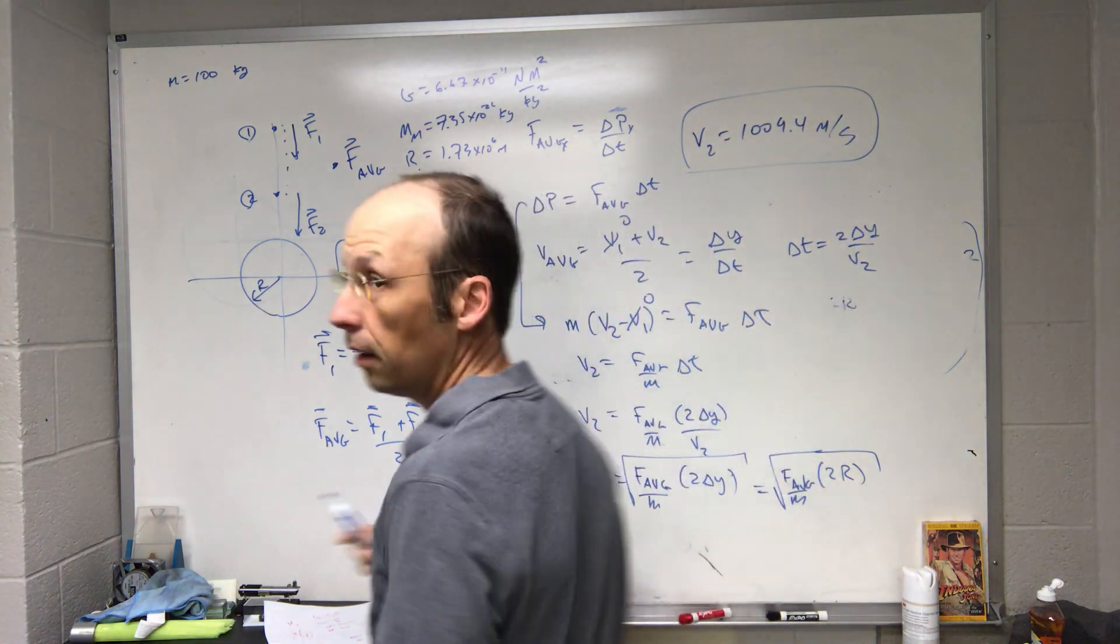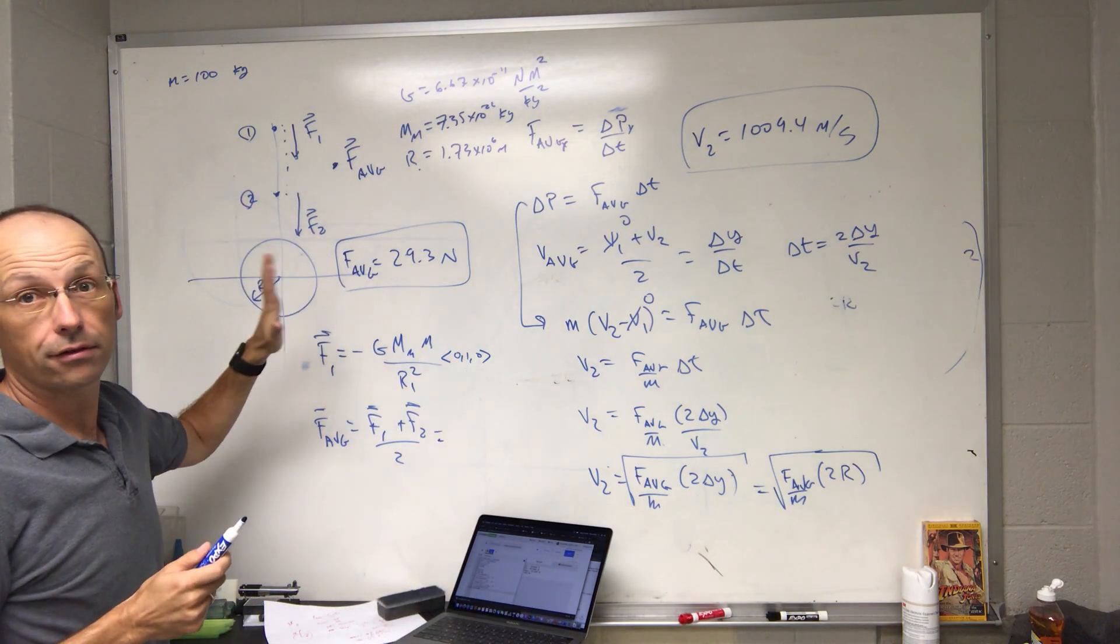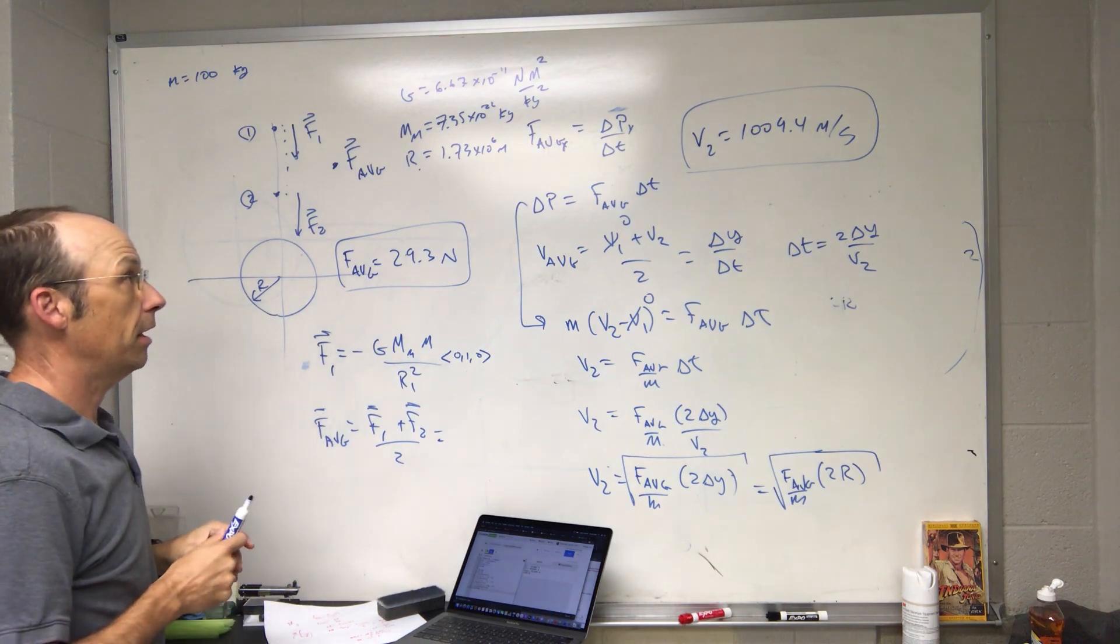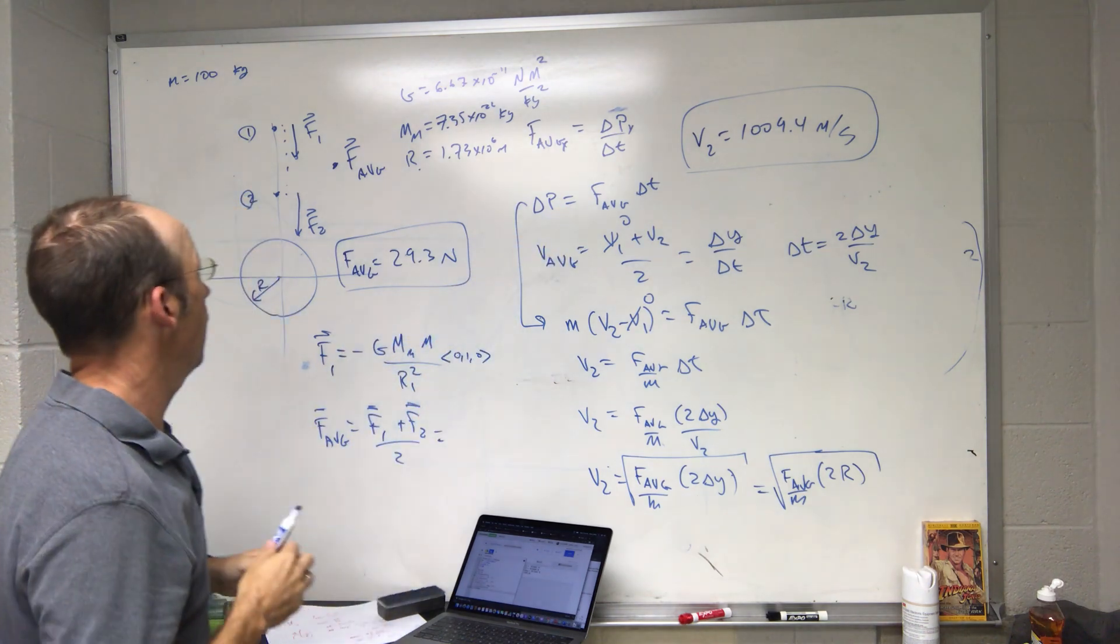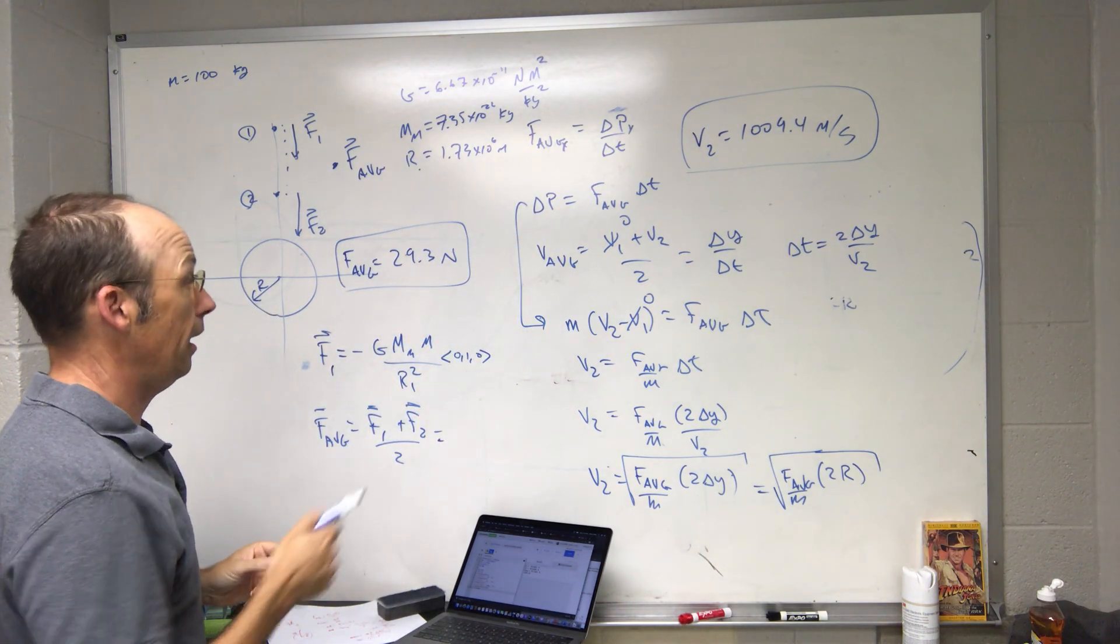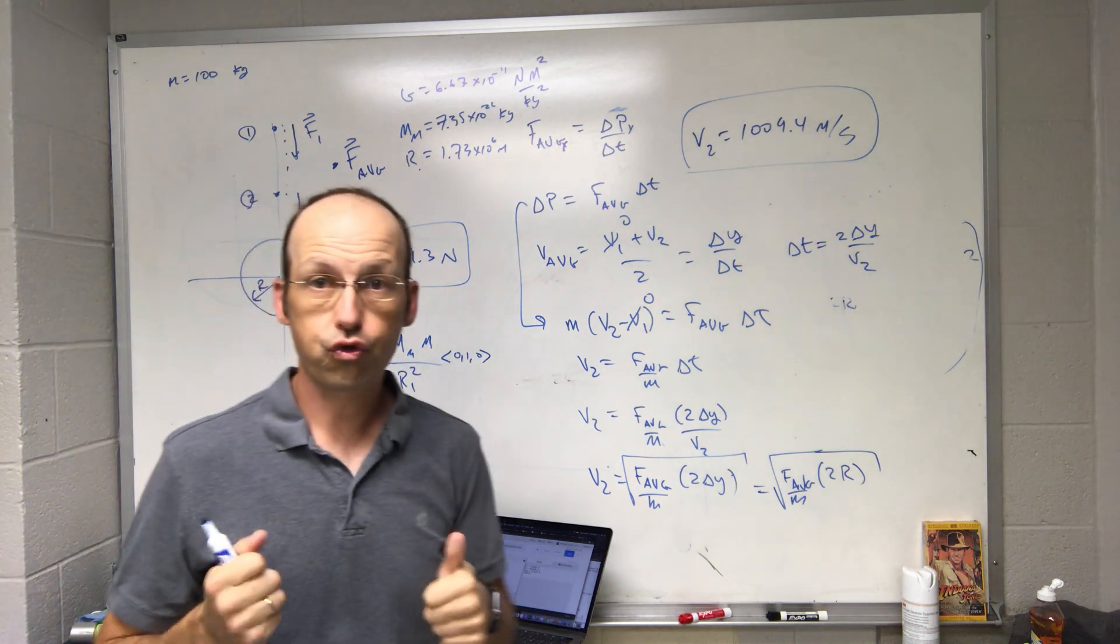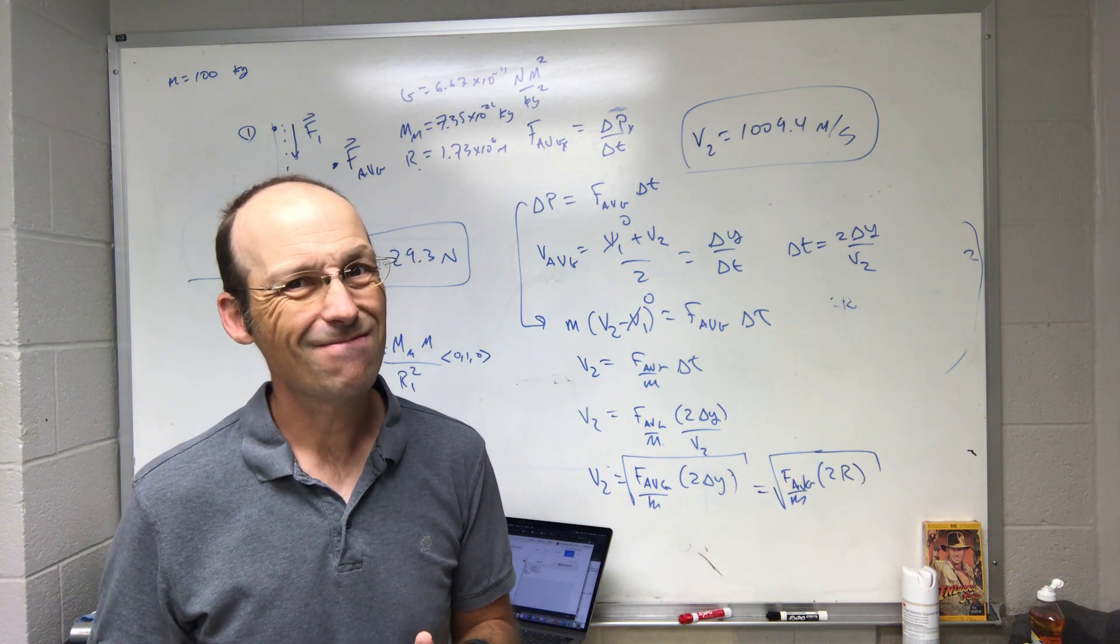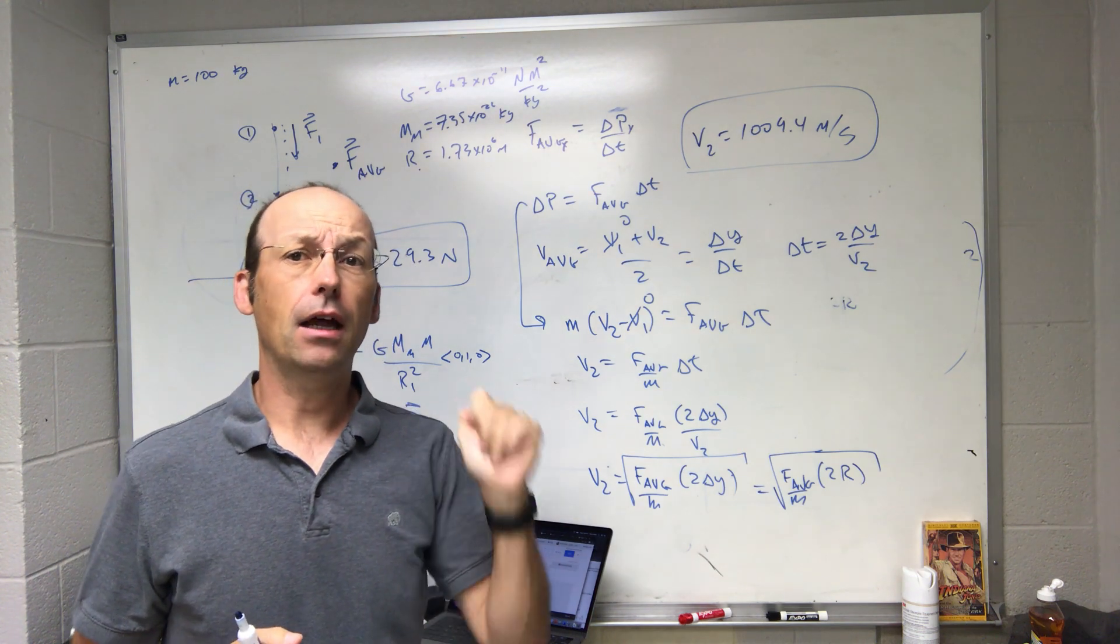So again we cheated, right? We cheated because I used the average force instead of the force, and the force changes. But even with that, it wasn't super trivial. And even then I don't get the vector velocity. I only get the magnitude because I had to do some squaring and stuff like that. Next one's going to be mostly easier.